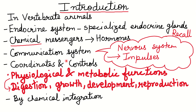Already we know that in vertebrate animals, the endocrine system is one of the communication systems. It consists of specialized endocrine glands. The endocrine system is a communication system — it helps communicate information through chemical messengers, which are called hormones.